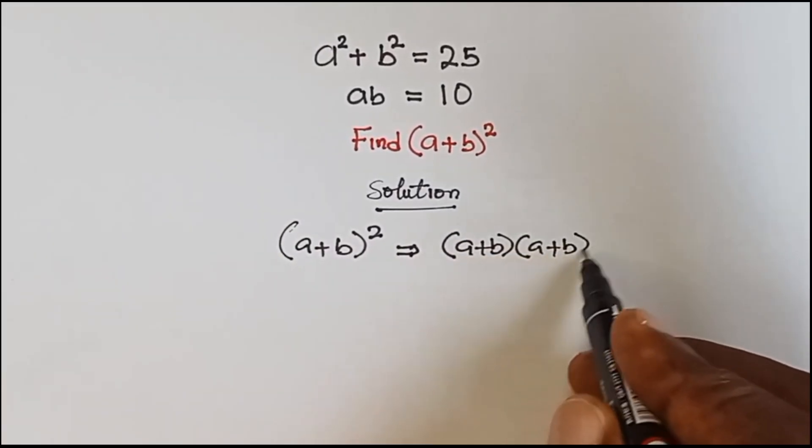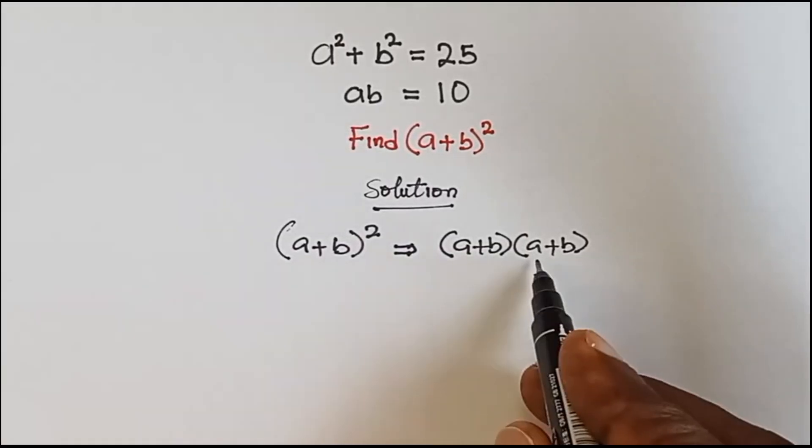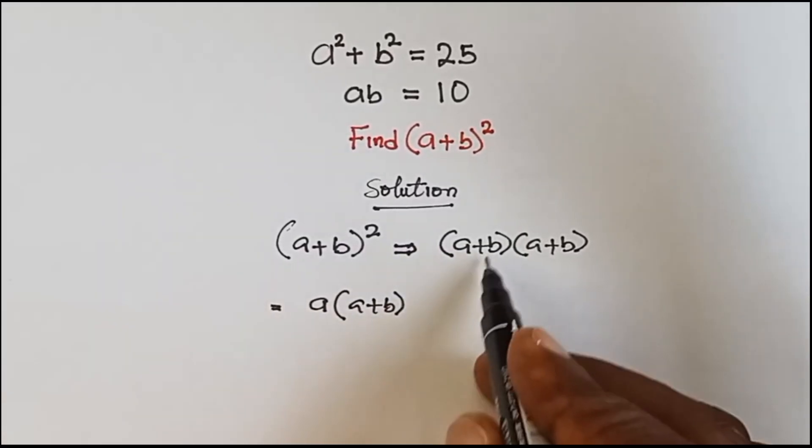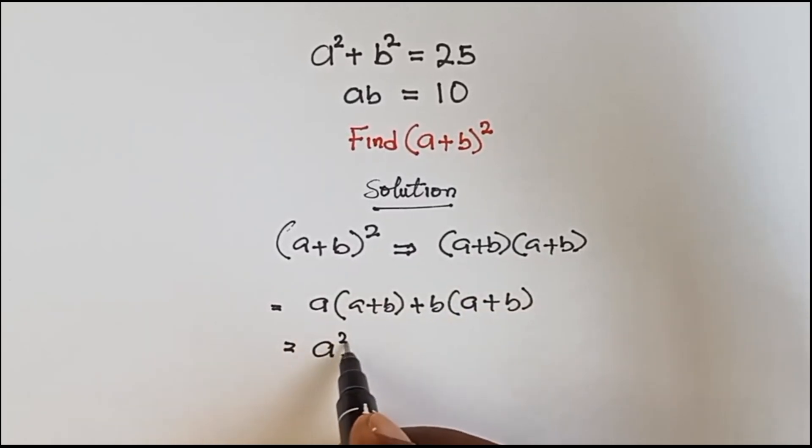Because if you multiply this, you're going to get this. Now let's continue by expanding this. When you expand this we have a(a + b) and then plus b(a + b). Then we have a times a is a², a times b is ab.